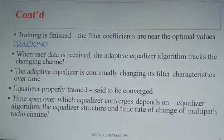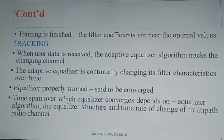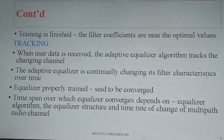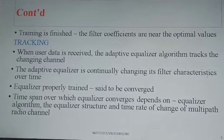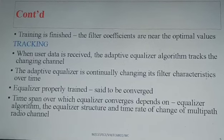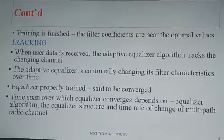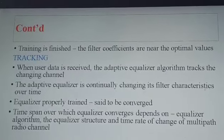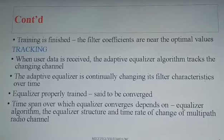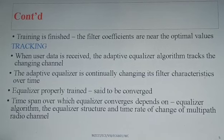At the time of tracking, when user data is received, the adaptive equalizer algorithm will track the change in the behavior of the channel. Based on the change in the behavior of the channel, the adaptive equalizer is continuously changing its filter characteristics. If the equalizer is properly trained, it is said to be converged. The time over which the equalizer converges is a function of the equalizer algorithm, the equalizer structure, and the time rate of change of the multipath radio channel.